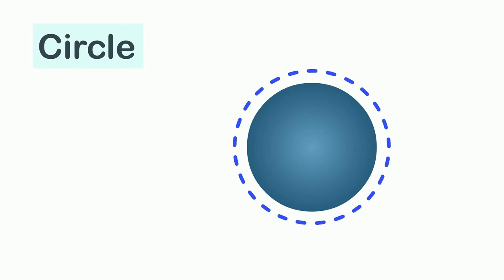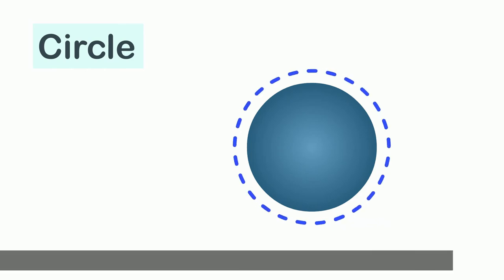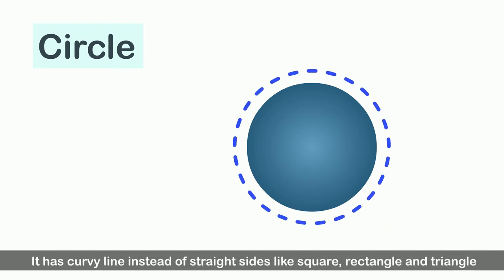This is a circle. A circle is round in shape. It has a curvy line instead of straight sides like square, rectangle, and triangle. It also does not have any corners. The boundary of the circle is called the circumference.